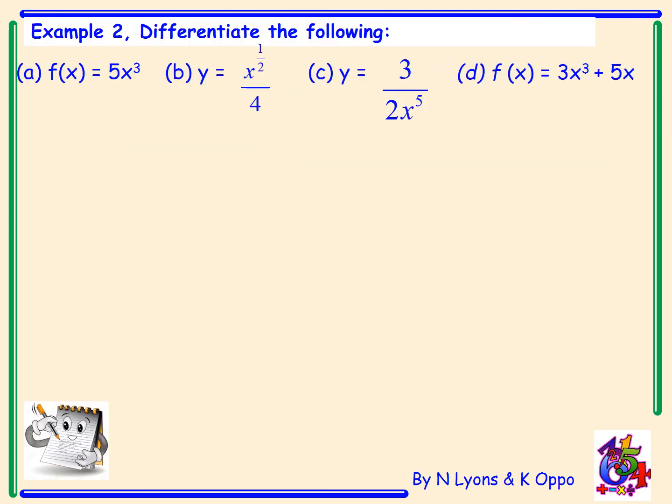Now we're going to differentiate the following which have coefficients in front of x. Example E: f(x) equals 5x cubed. So differentiating, we bring the 3 down and multiply with 5 to get 15, and subtract 1 from the power to get x squared.